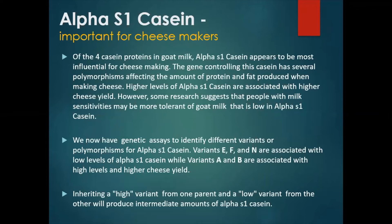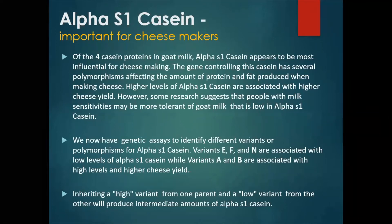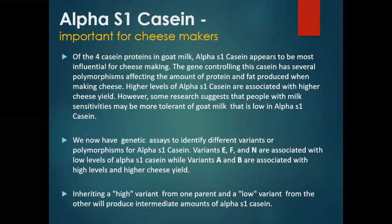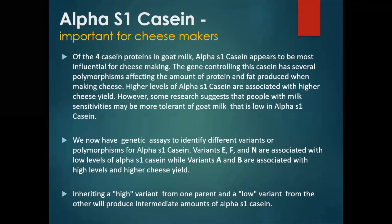Of the four casein proteins in goat milk, alpha S1 casein appears to be the most influential for cheesemaking. The gene controlling this casein has several polymorphisms which affect the amount of protein and fat produced when making cheese. Higher levels of alpha S1 casein are associated with higher cheese yield. However, some research also suggests that people with milk sensitivities may be more tolerant of goat milk that is low in alpha S1 casein. So depending on your purpose, different alleles are going to be important to you.